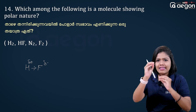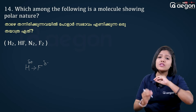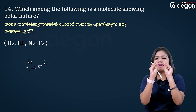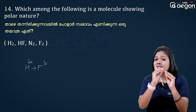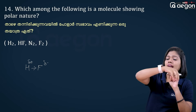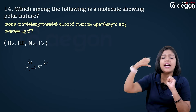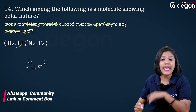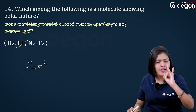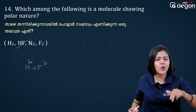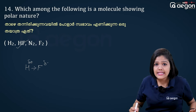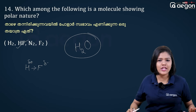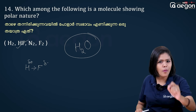Because of different electronegativities, a slight charge separation is created in hydrogen fluoride (HF), making it polar. HF, HBr, and HCl are examples of polar nature compounds. H2O is also a polar compound.